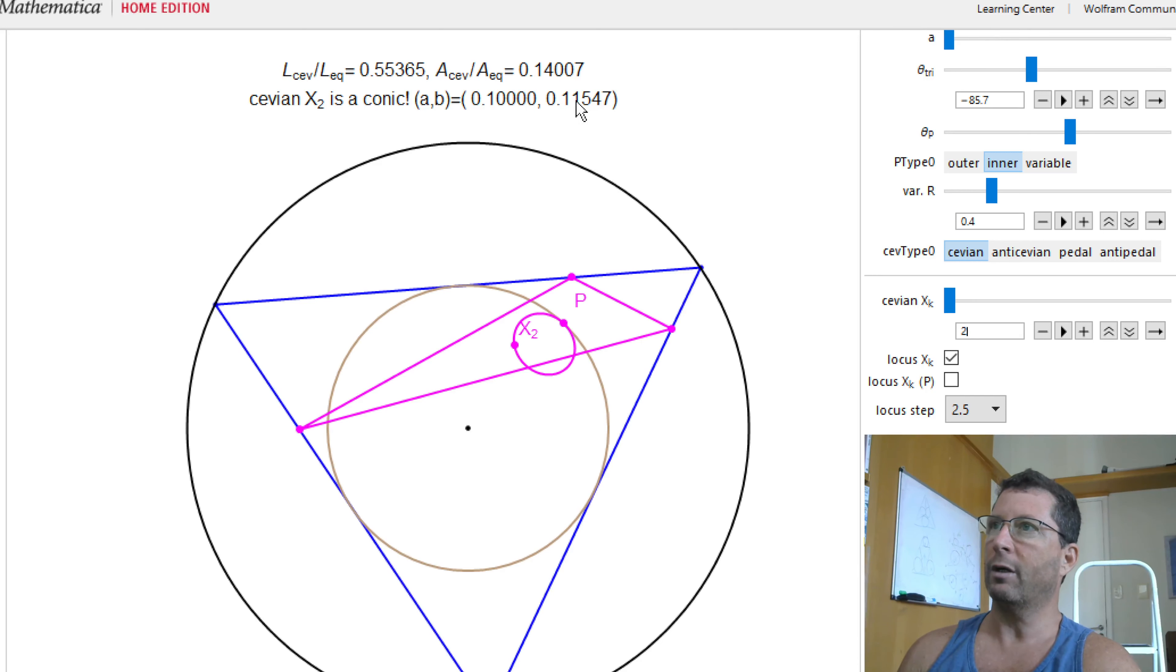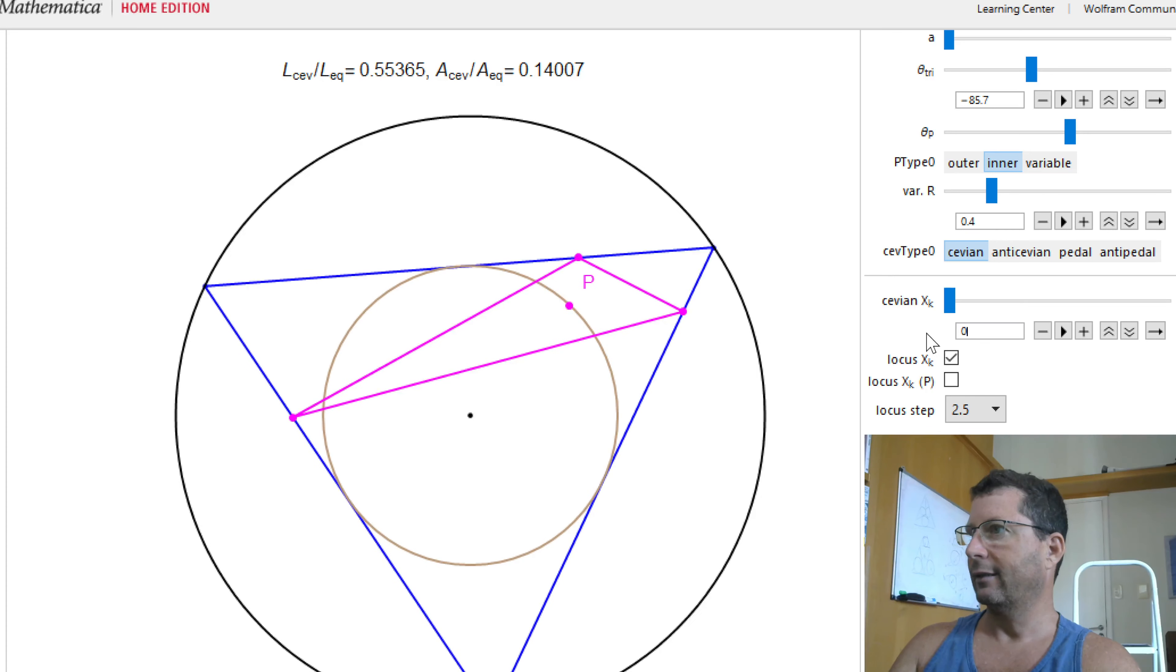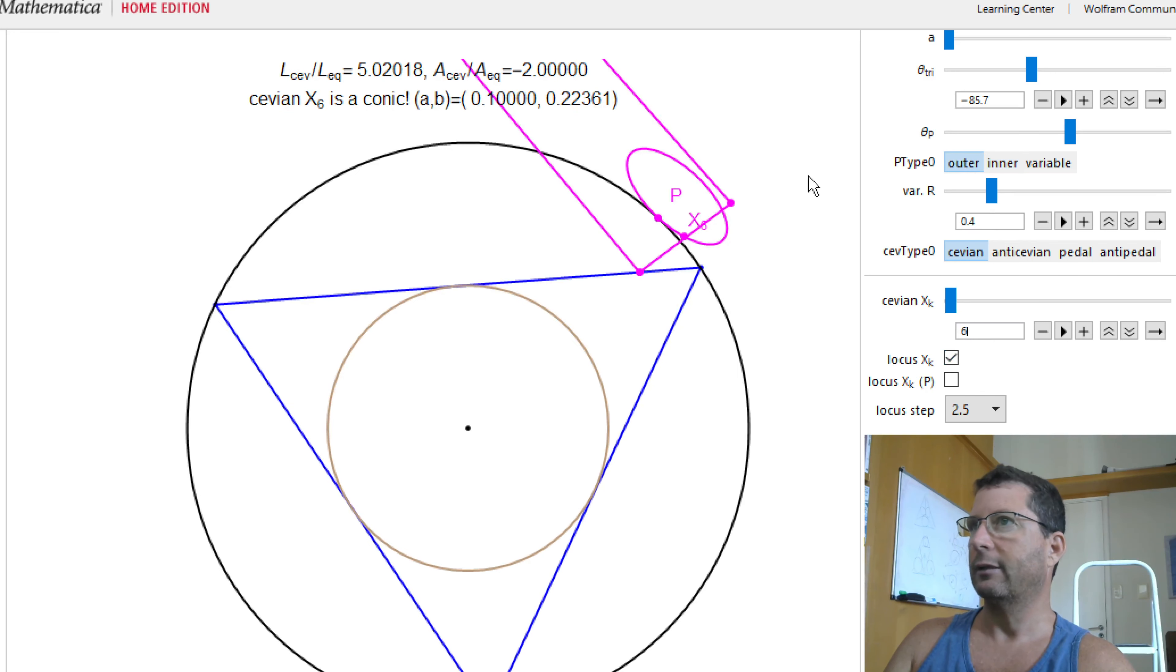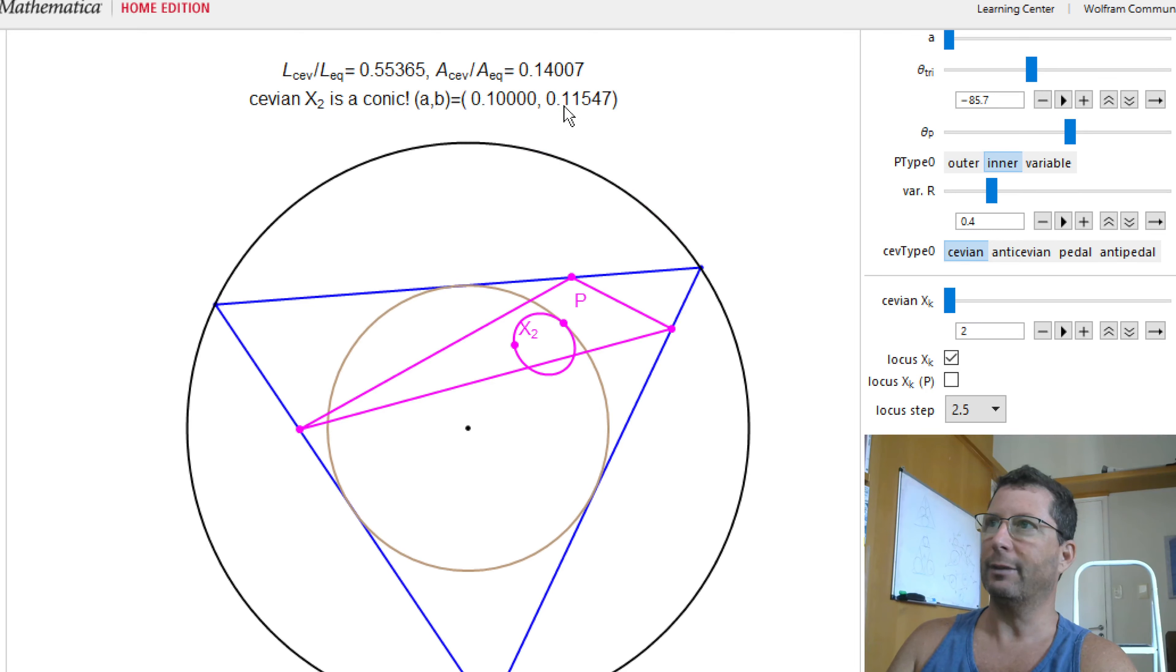In fact, is this 0.1154, so this times 2 is something like 0.23. Is that the same number I was getting for X6 in the outer? 0.223, right? So X2 in the inner is 0.11. So this is not going to be 0.223, this is going to be something like 0.23. So I thought that this could have been twice the value that I got for the major axis on X6, but it's not. It's pretty close. So that's what we get for X2.